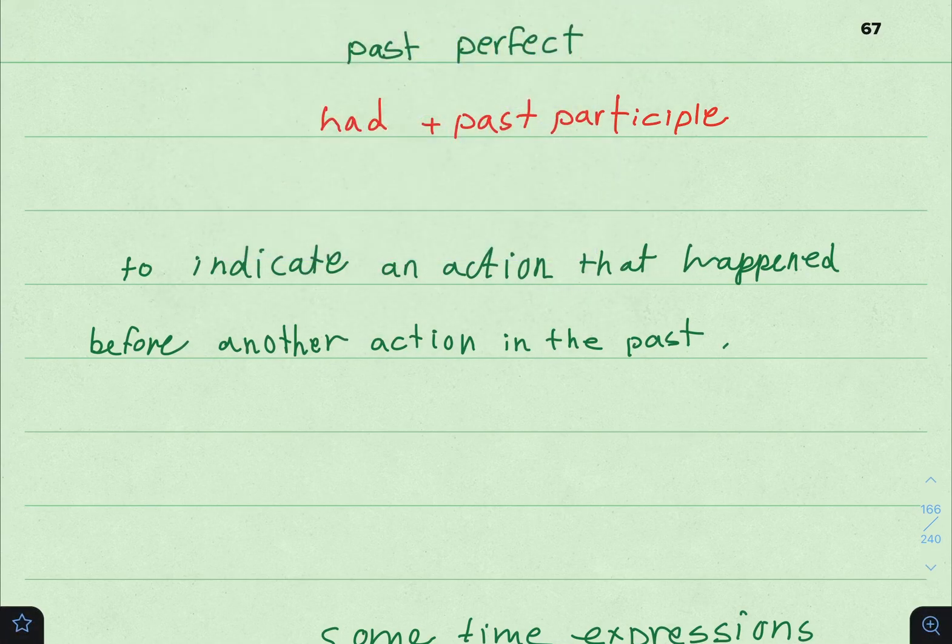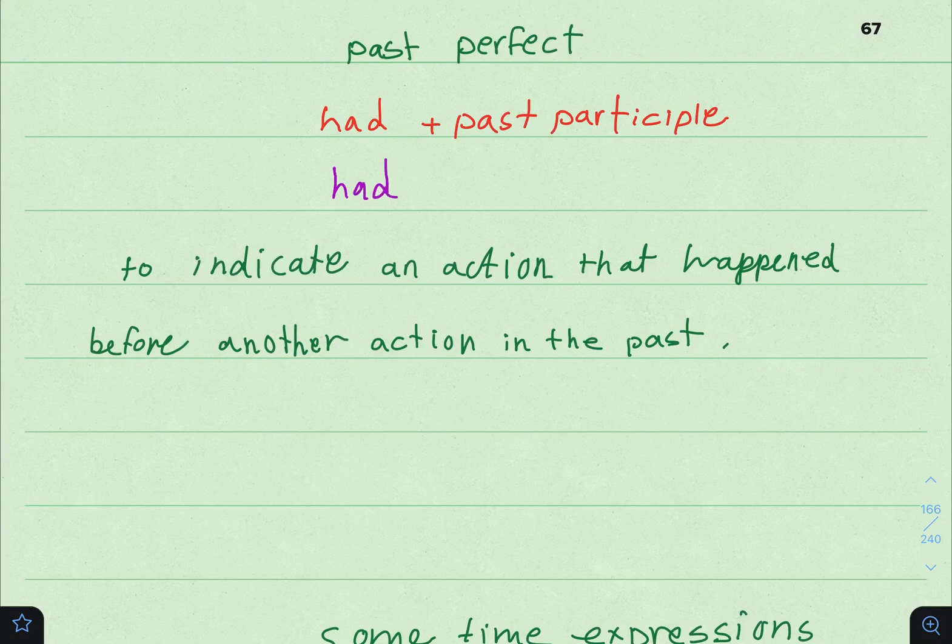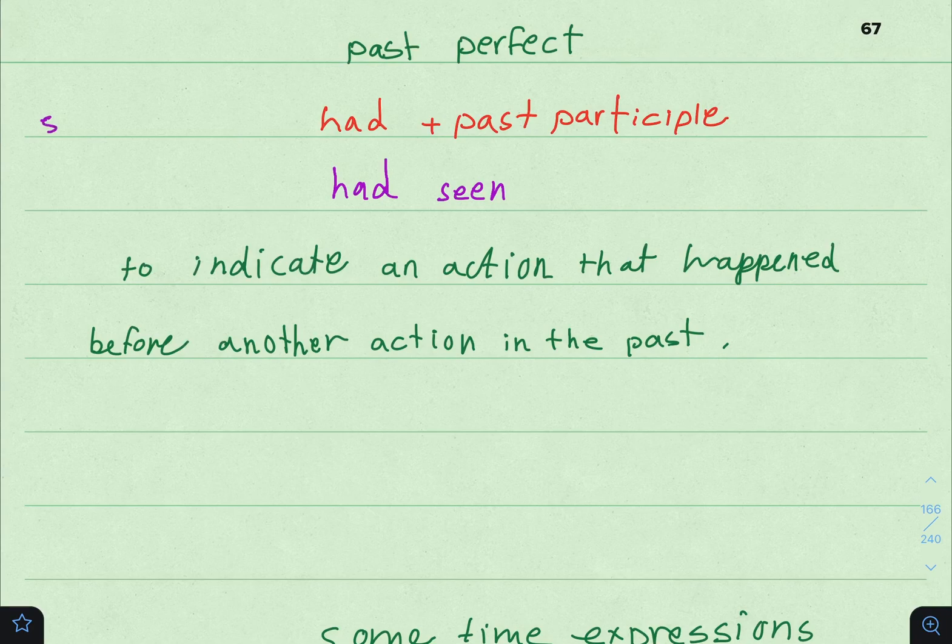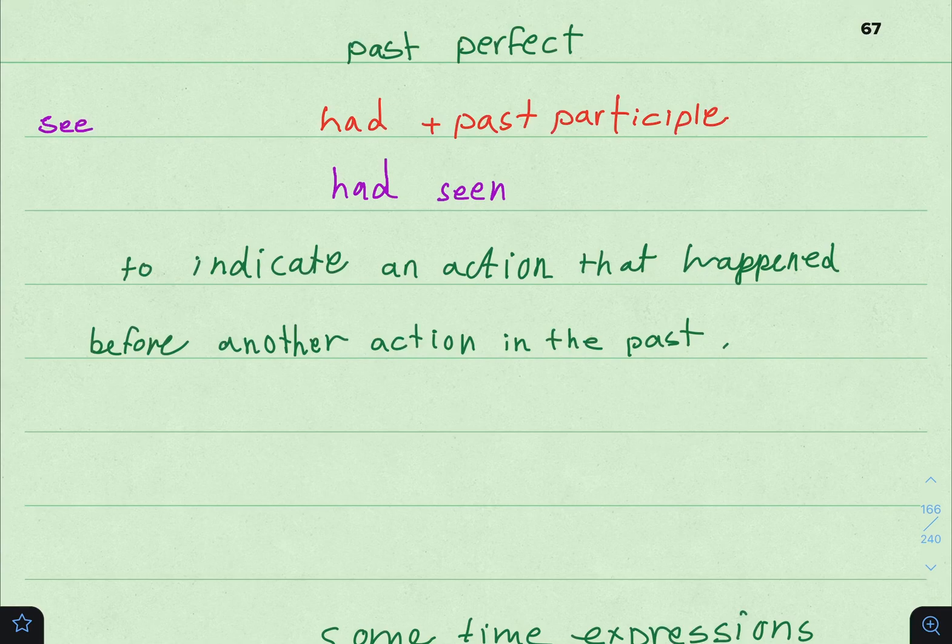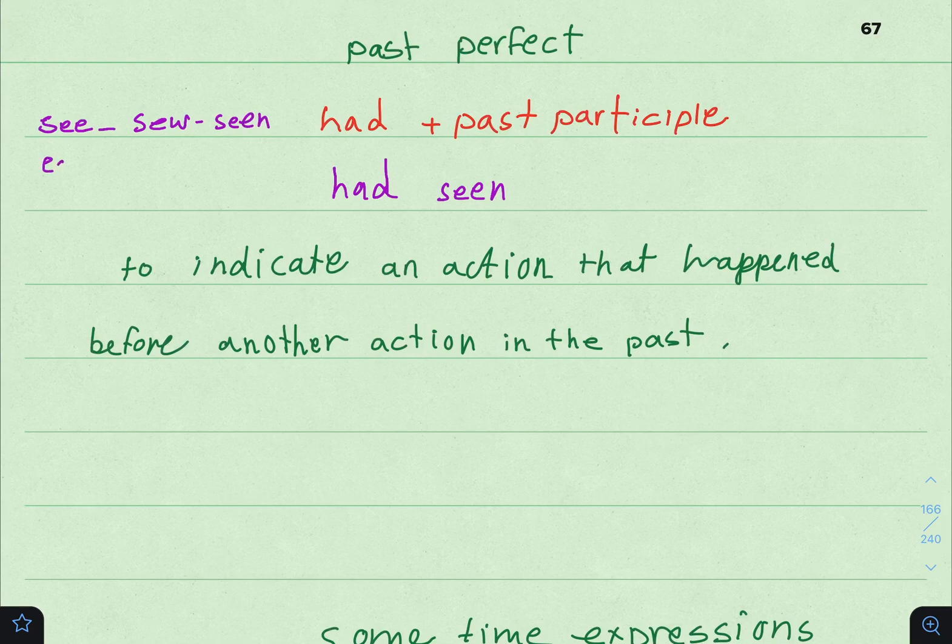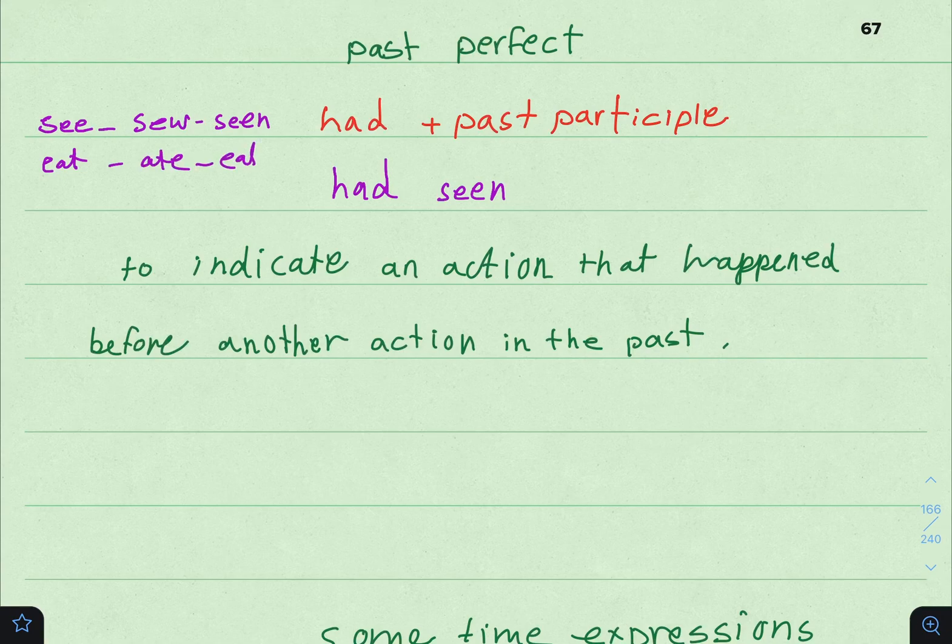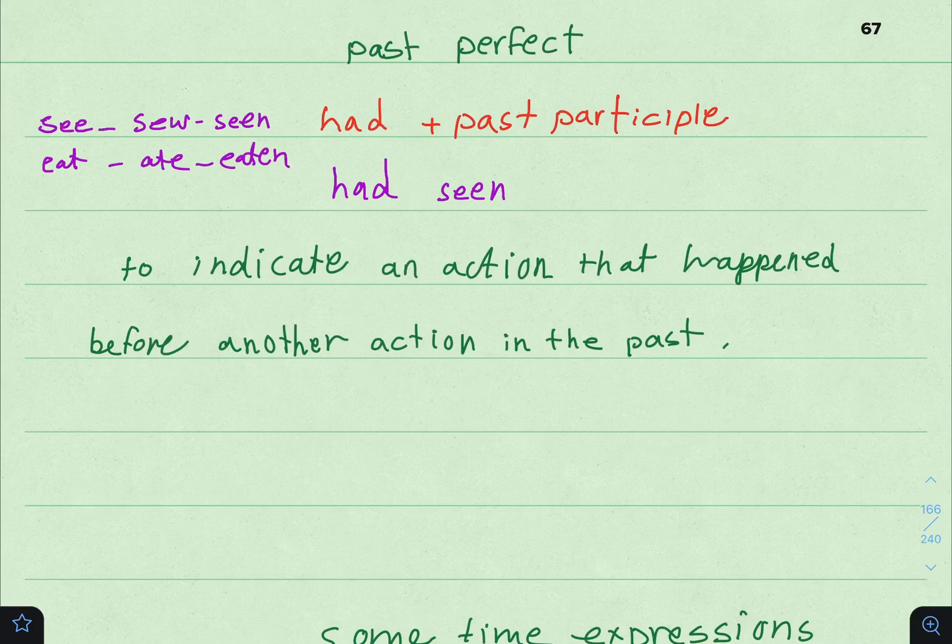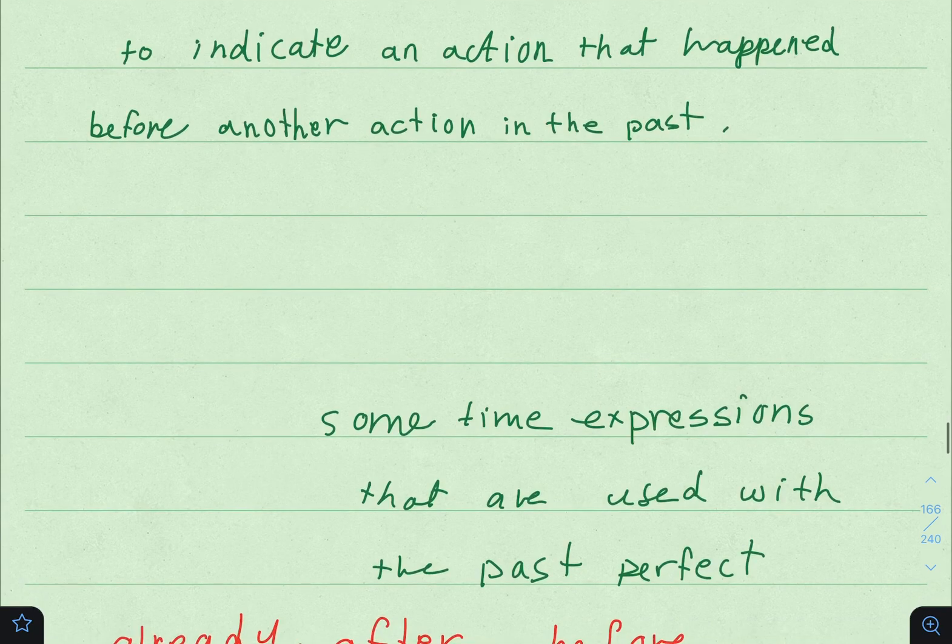The Past Perfect formation يتكون من had والـ past participle، اللي هو التصريف الثالث للفعل: had seen, had eaten, had forgotten. You need to know the three forms of verbs - the basic form like 'see', the past 'saw', and the past participle 'seen'. Eat, ate, eaten.